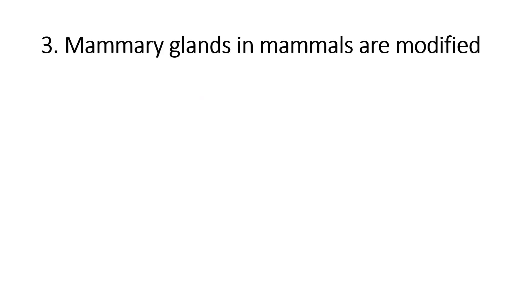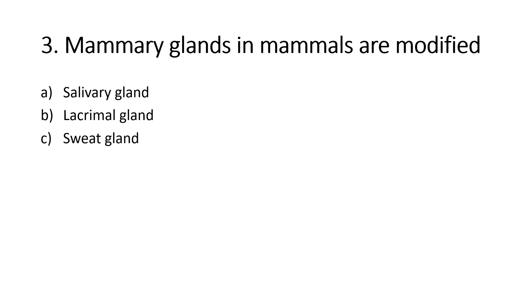Mammary glands in mammals are modified: Option A, Salivary gland; Option B, Lacrimal gland; Option C, Sweat gland; Option D, Sebaceous gland. Right answer is Option C, Sweat glands. Breast, or mammary glands, are modified apocrine sweat glands.